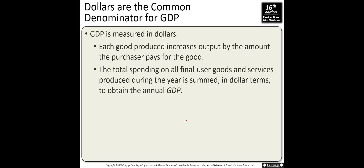Dollars are the common denominator for GDP — GDP is measured in dollars. For example, if island A produces one million oranges and island B produces one million cars, island B has a higher GDP because cars have more value than oranges. Although they produce the same number of goods, island B has more income. GDP is the total spending on all final user goods and services produced during the year, summed up in dollar terms to obtain annual GDP.